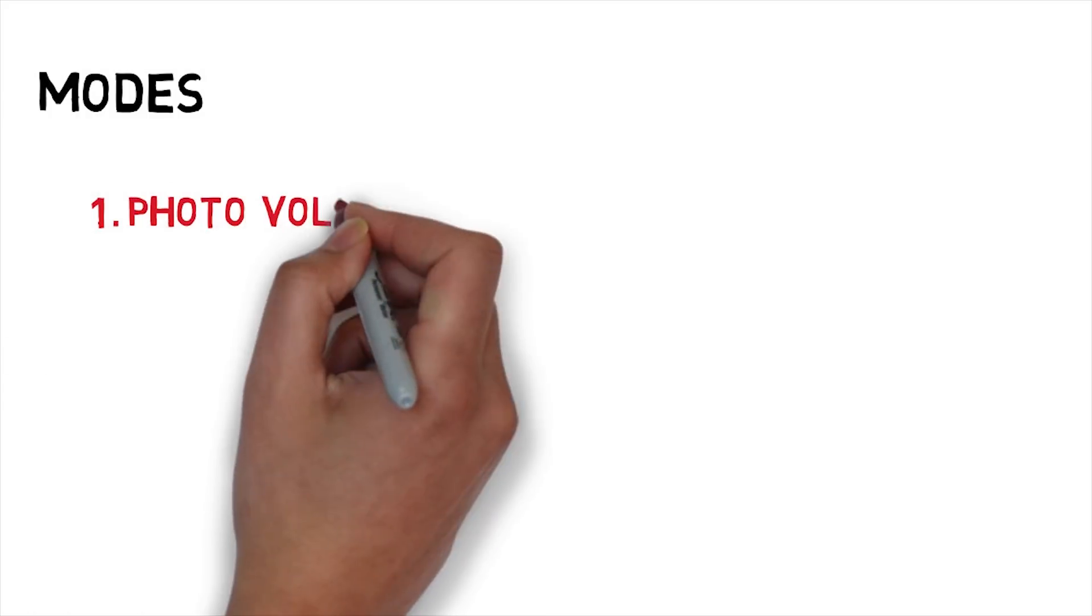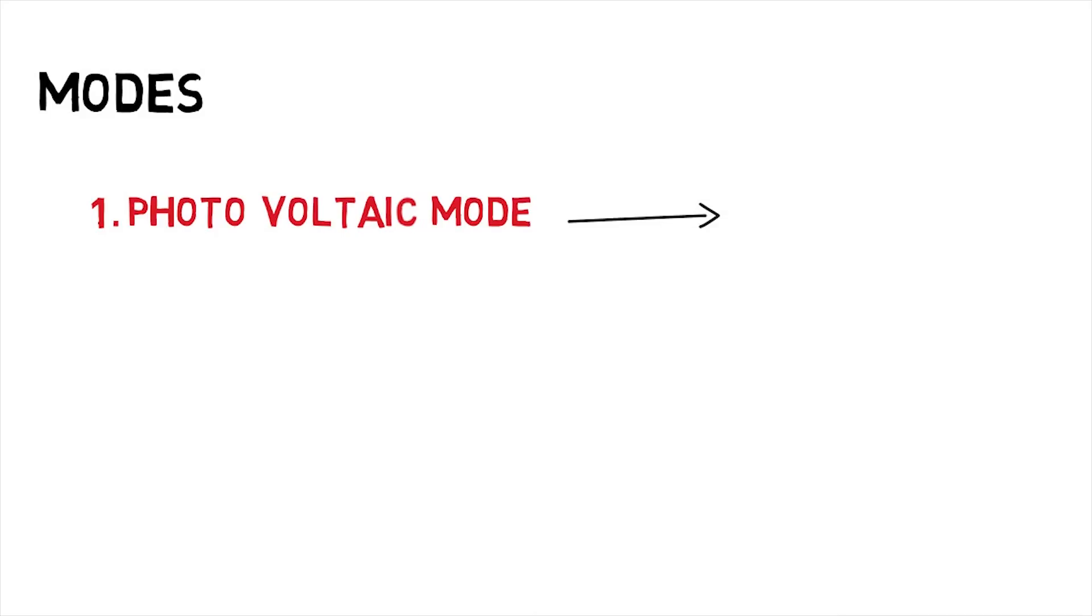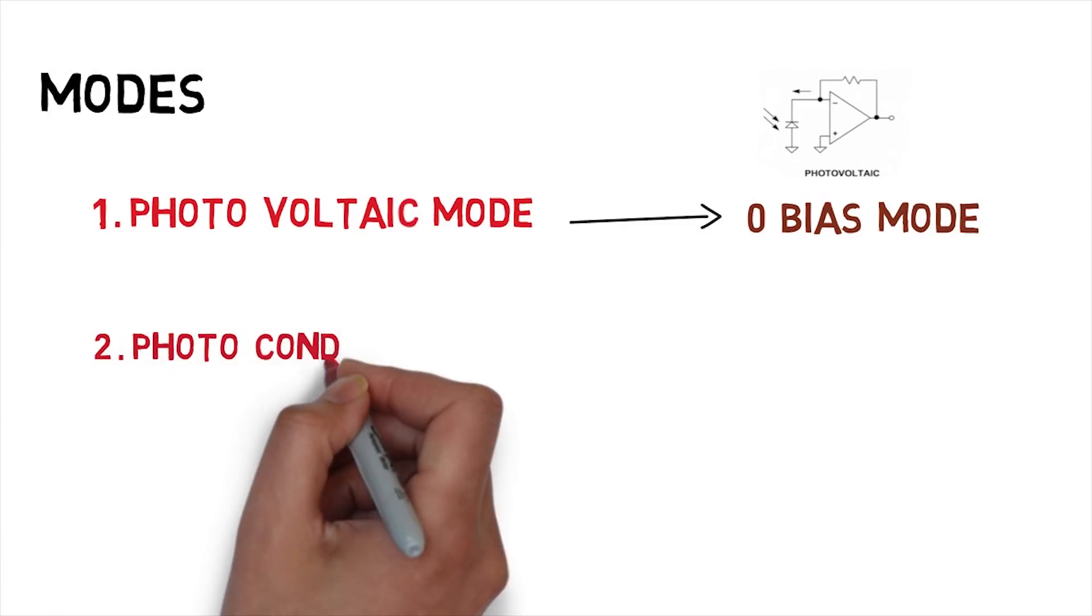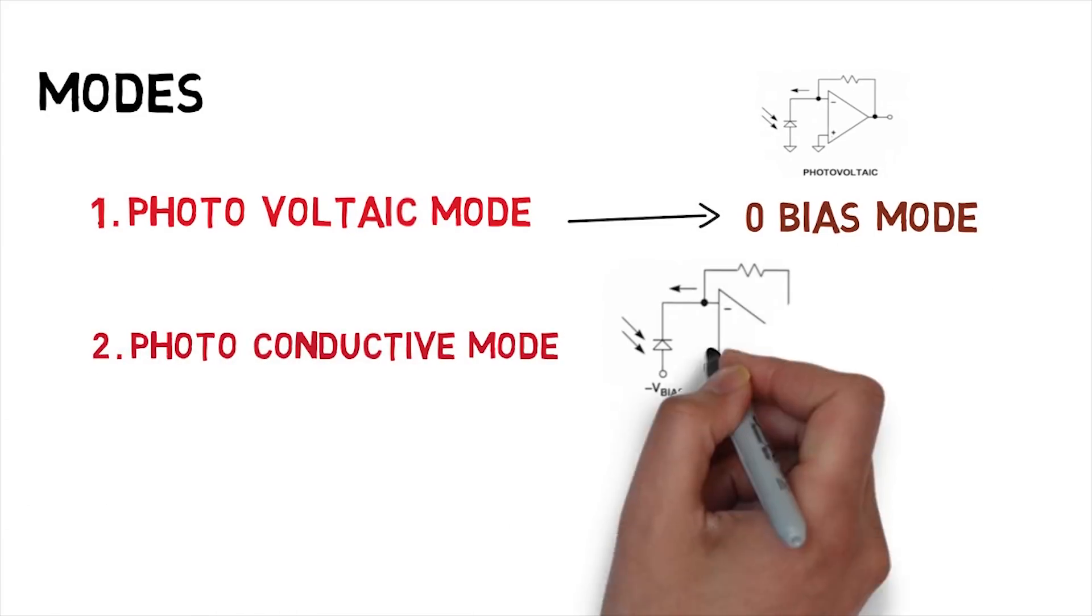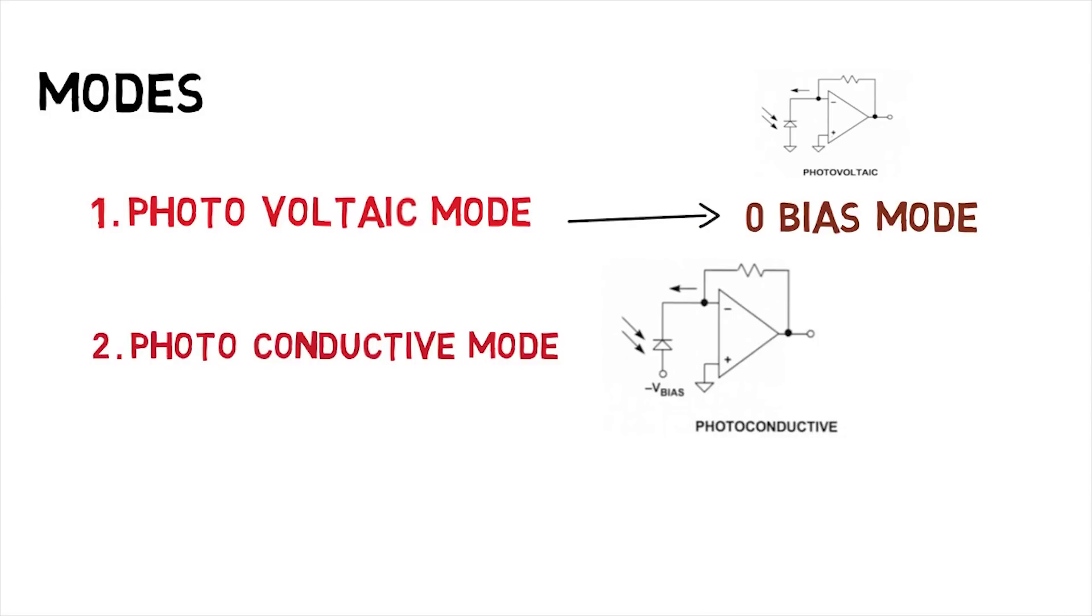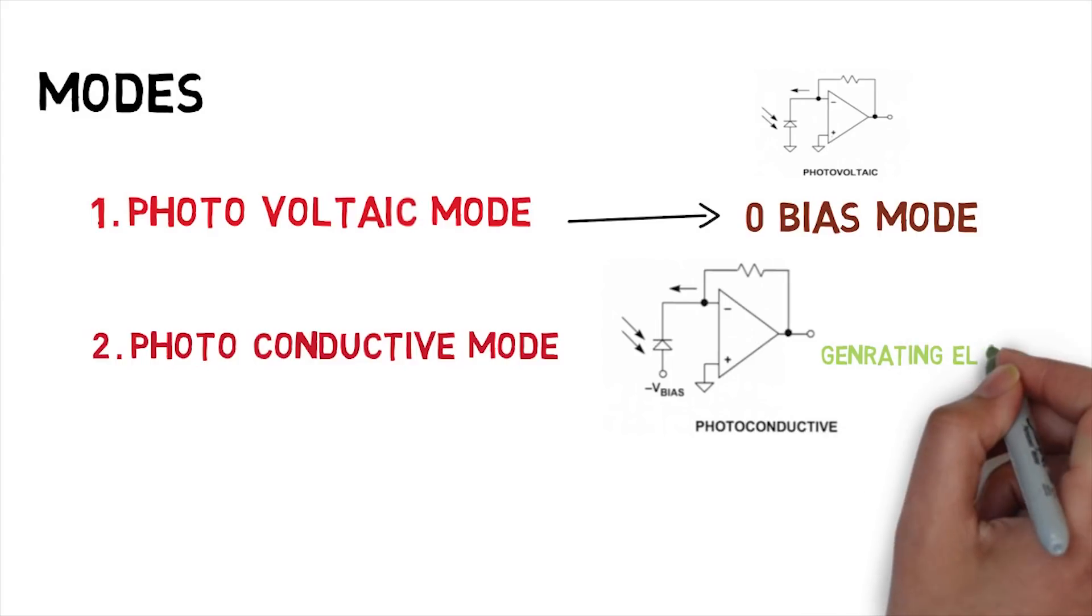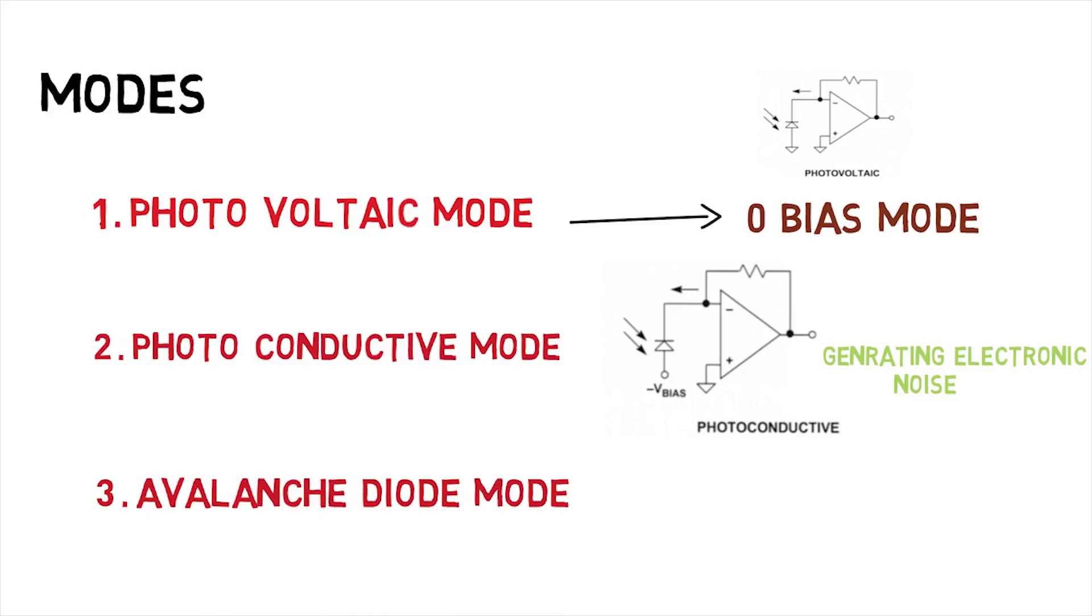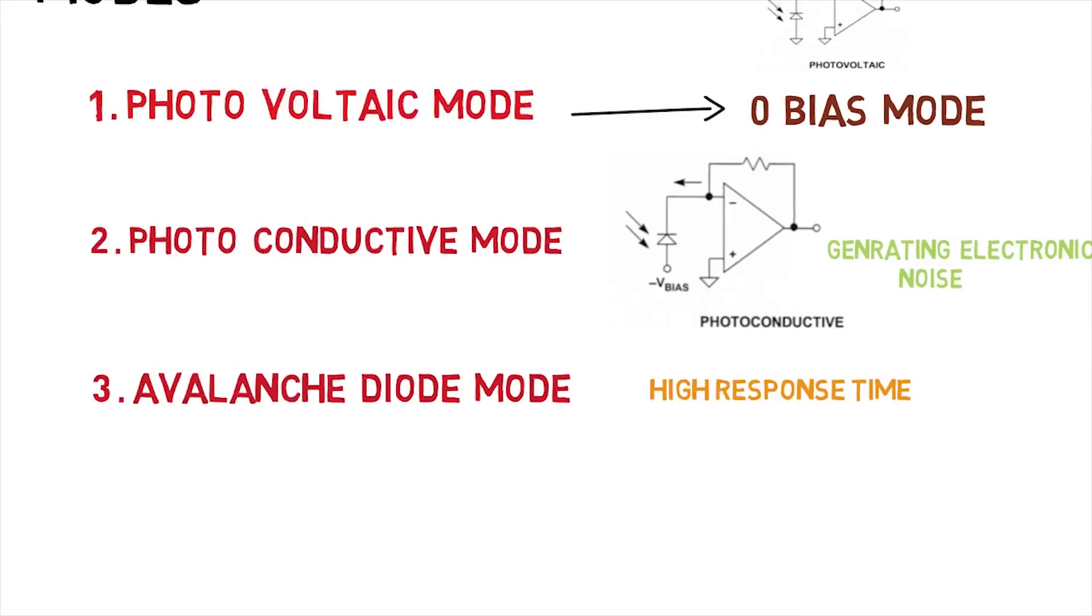What modes work? Three modes. First, photovoltaic mode - this is zero bias mode with non-linear voltage. Second is photoconductive mode, which uses reverse bias voltage. This increases depletion layer width, improving response time and reducing junction capacitance. This is fast mode but has more electronic noise. Third is avalanche diode mode, which operates at high reverse bias condition. Every electron hole creates avalanche multiplication. This response time is very high.